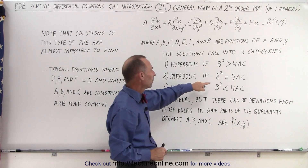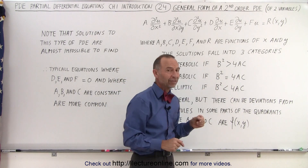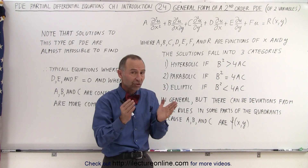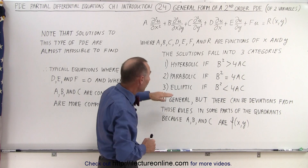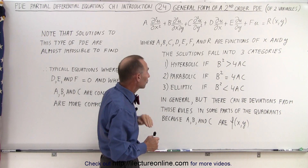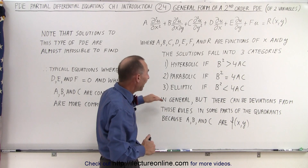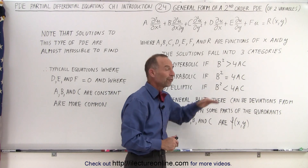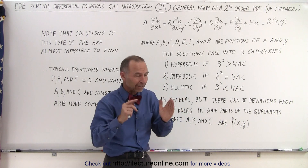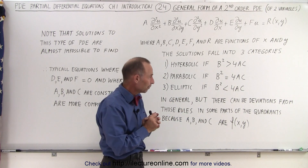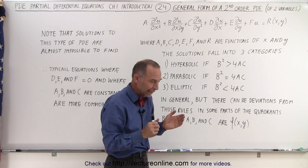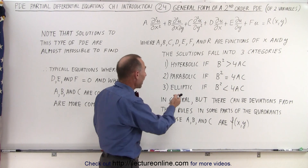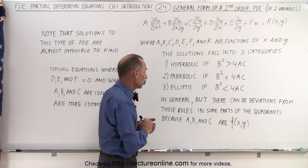If B squared equals 4AC, so that the portion underneath the radical becomes zero, then we have a parabolic solution. And if B squared is less than 4AC — when the quantity inside the radical is less than zero — then we have an elliptic solution.